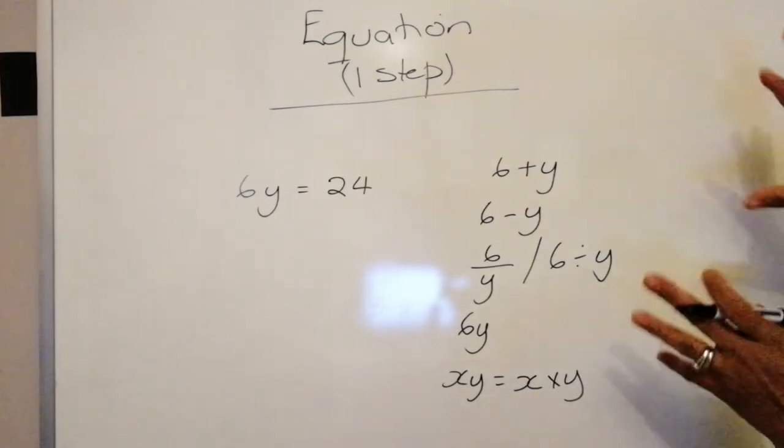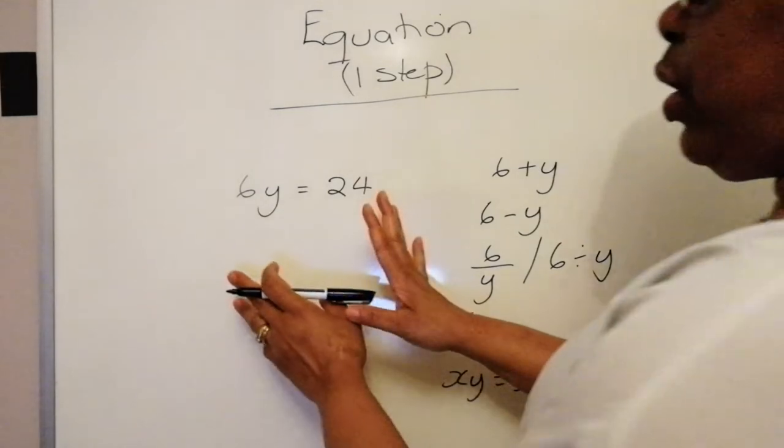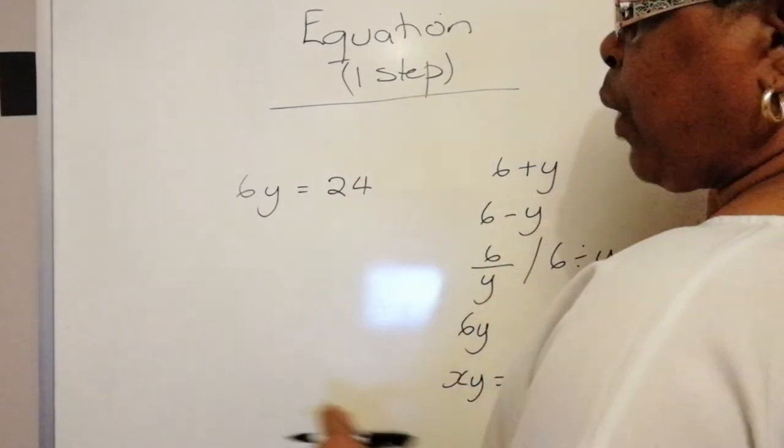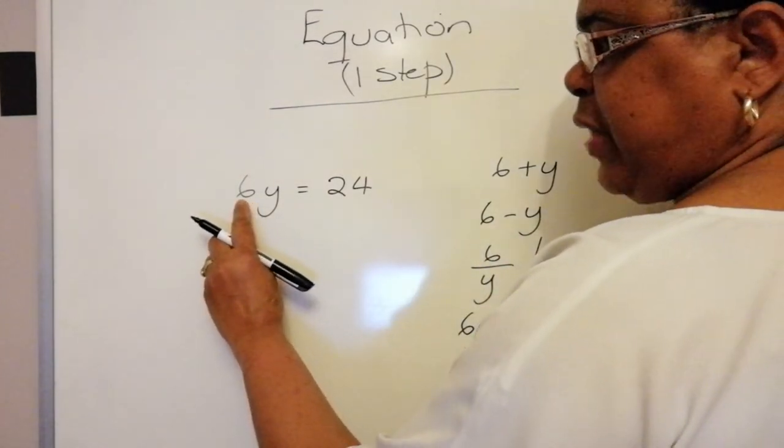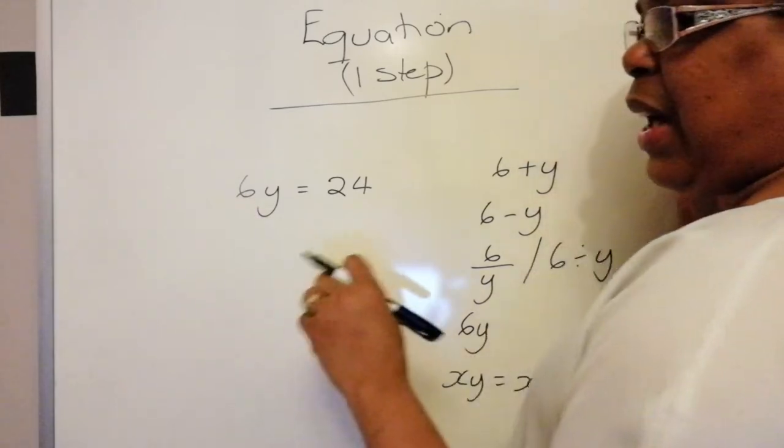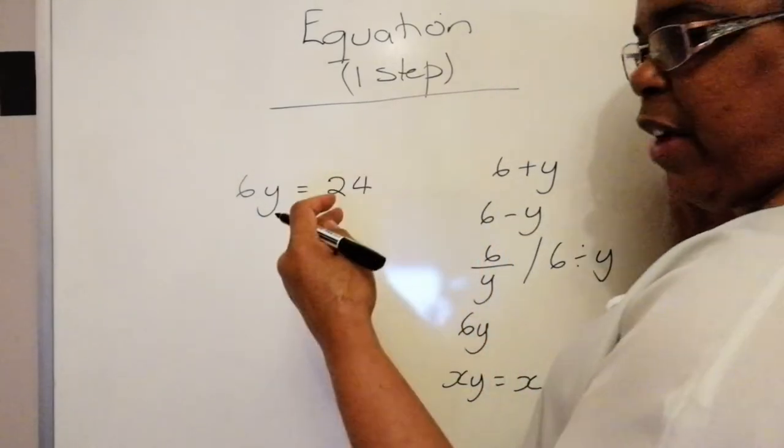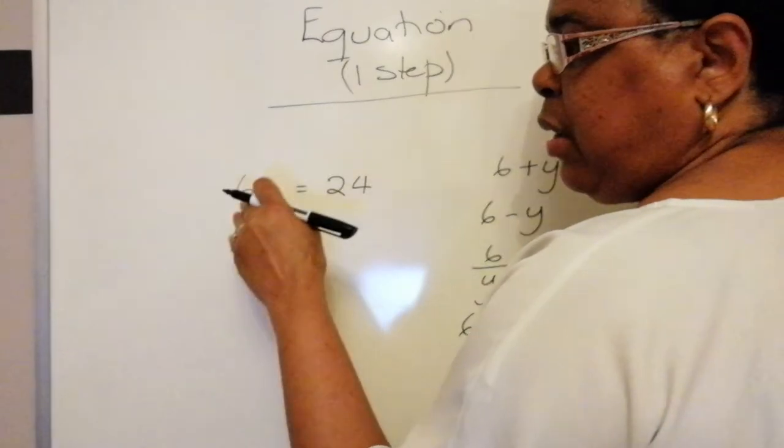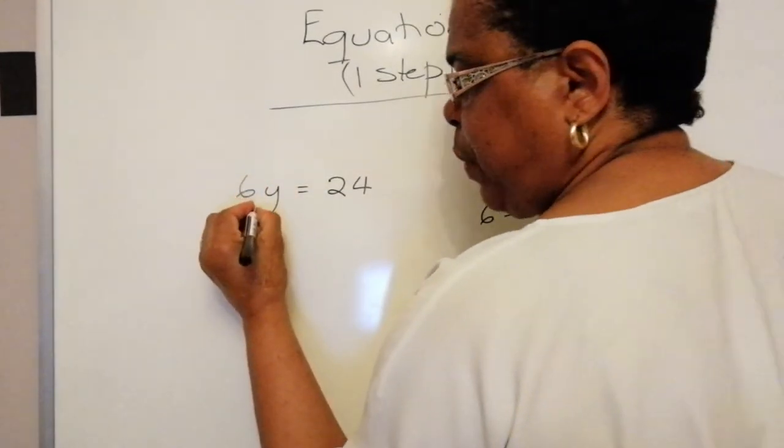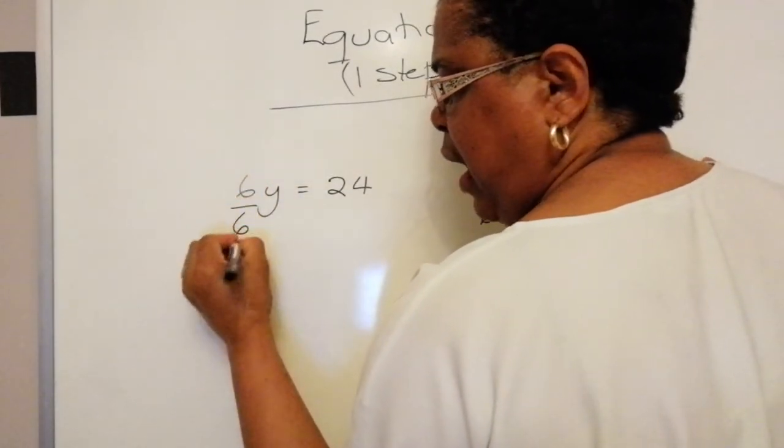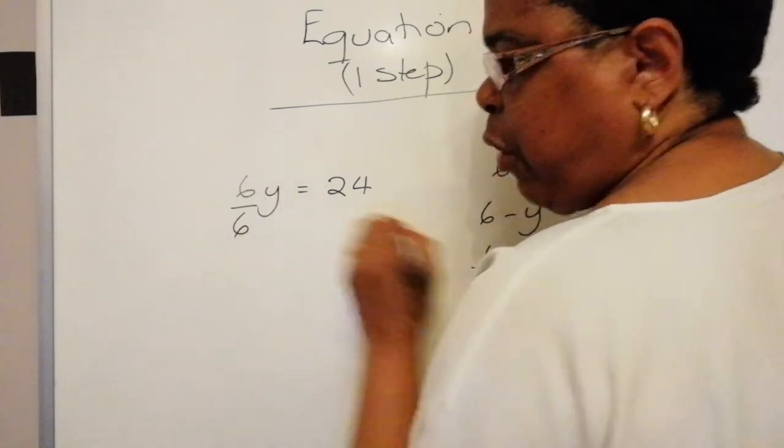So with this knowledge, let's transfer it over to this side. Now if I'm getting rid of 6, it means that I need to do the opposite of whatever it's doing. At the moment, it is multiplying. So I'm going to do the opposite of multiply, which is divide, and that will get rid of it.